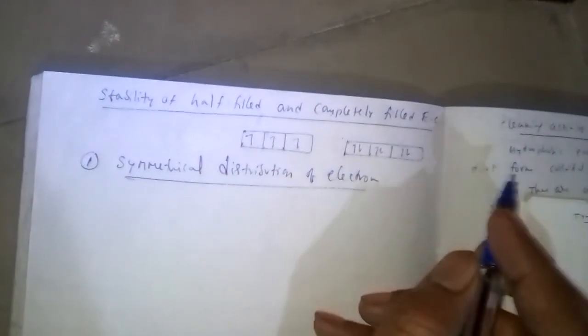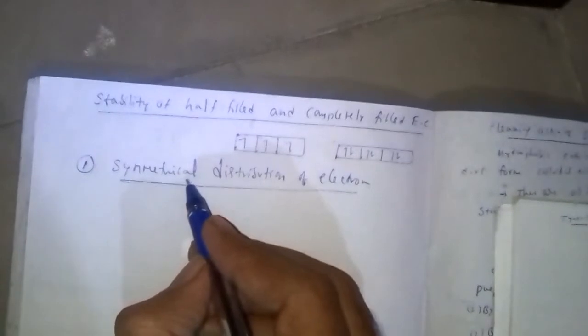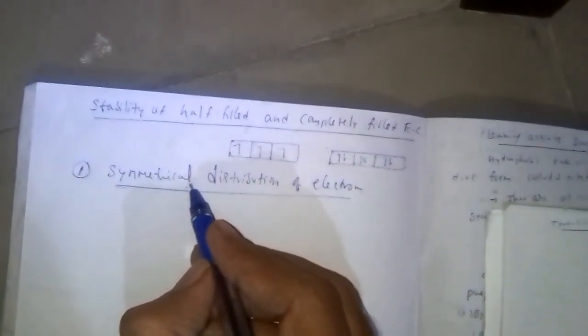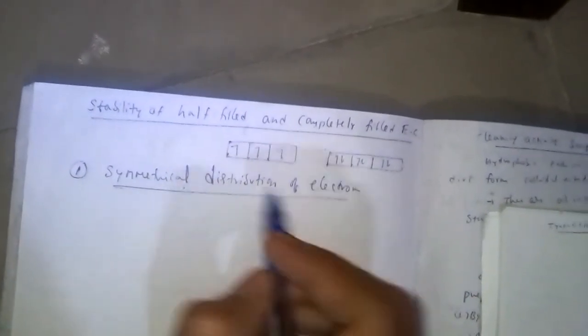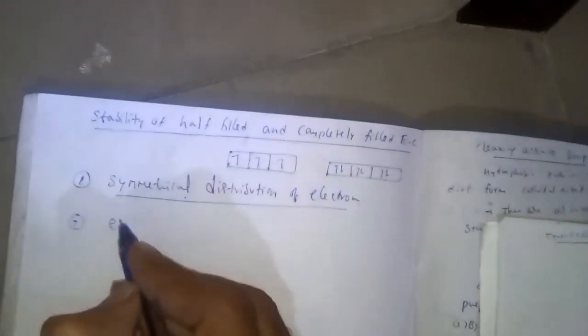So these are stable. First reason: symmetry leads to stability in half-filled and completely filled subshells where electrons are symmetrically distributed. Second one: exchange energy.